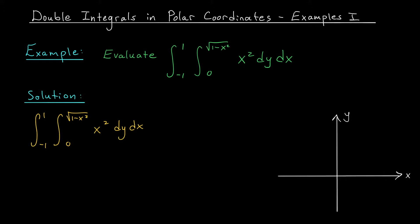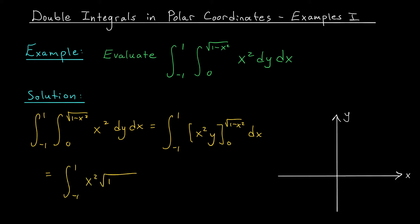Now if you just encountered this integral out in the wild, your first attempt might just be to use Cartesian coordinates. We look at this inner integral with respect to y — an antiderivative for x squared would be x squared y — so we would get the integral from minus 1 to 1 of x squared y evaluated from 0 to the square root of 1 minus x squared dx. When you sub in your bounds, 0 kills the whole expression, so we're simply left with the integral from minus 1 to 1 of x squared root 1 minus x squared dx.